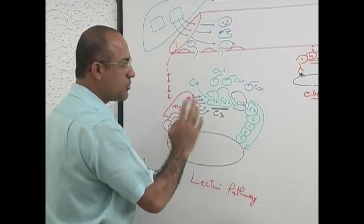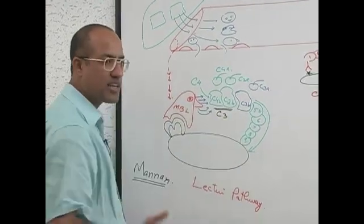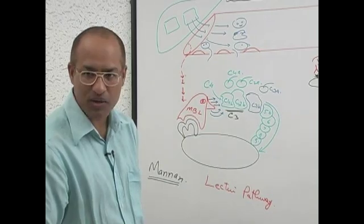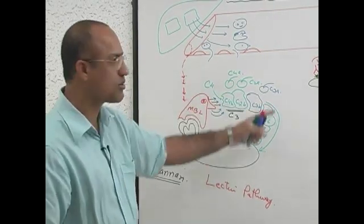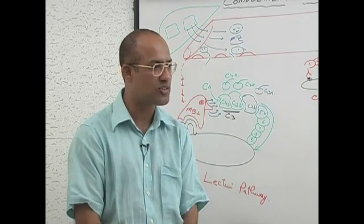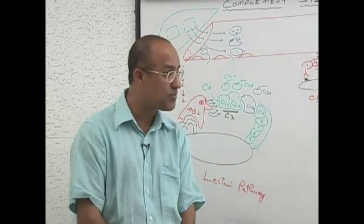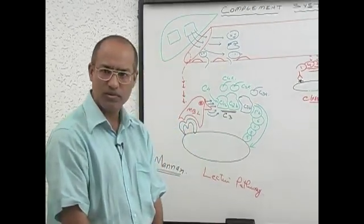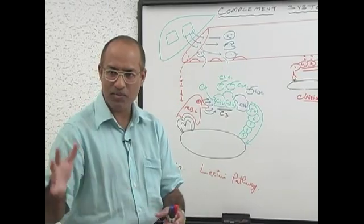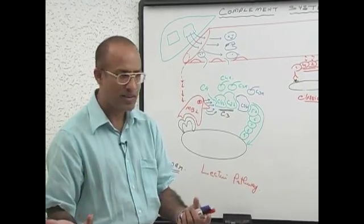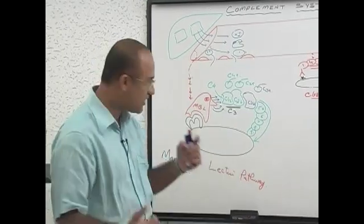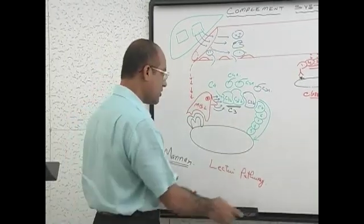We also talked about C3B — we checked it as an opsonin molecule. But we did not talk about the small 'A' fragments. These broken fragments are also doing certain functions — these broken pieces also serve important roles.